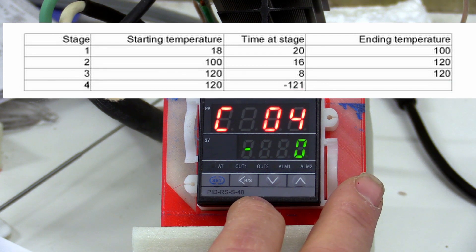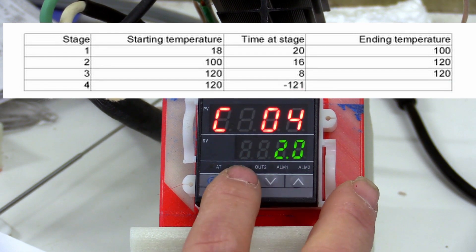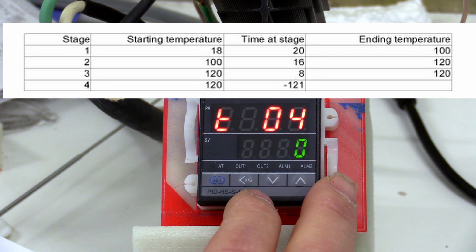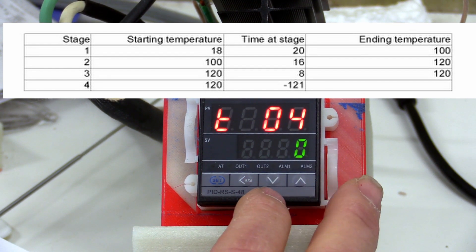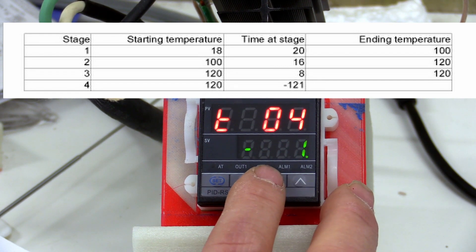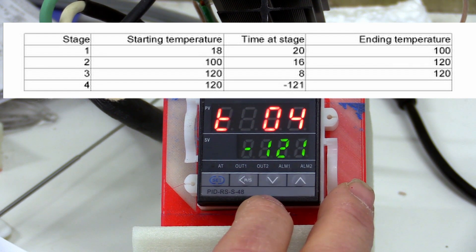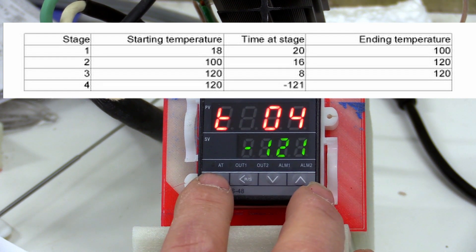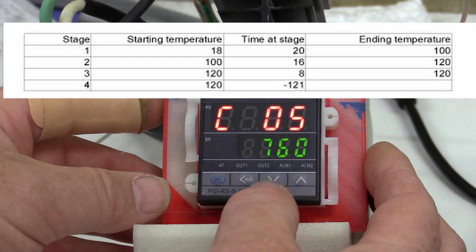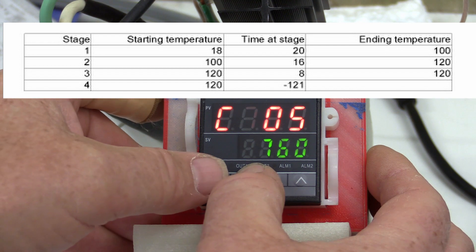Stage 4 is the starting temperature of this stage, which was also the ending temperature of stage 3, or 120 degrees. Hit set. To terminate the program when it's running, enter a time of minus 121. To exit programming, hold the left arrow and the set key at the same time.